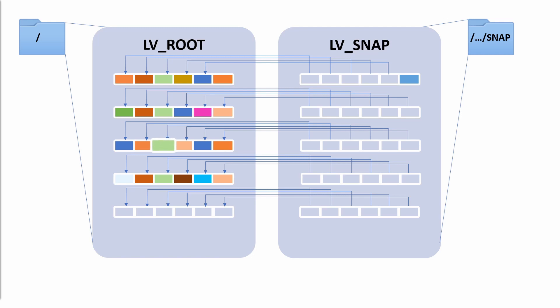If we modify some other data, before it's modified it gets copied over to the snapshot. The data is then modified on the source logical volume and the pointer is removed. What about blank or unused blocks on the source disk? Those also get copied over as blank blocks — they do consume space. The pointers are removed, whatever is in those blocks is copied over (which would be nothing), and the source logical volume is modified.